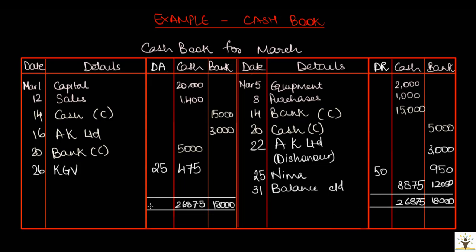Discount columns are not balanced; instead, the totals of the discount columns are taken — $25 and $50. Cash and bank columns have a debit balance of $8,875 and $12,050 respectively. In case of cash, a credit balance is not possible as payments cannot be made more than receipts. But in case of bank, it is possible because banks allow an overdraft facility, whereby the business may overdraw its account and make payments even if sufficient balance is not available. The overdraft balance, or credit balance in a bank, is a current liability of the business.